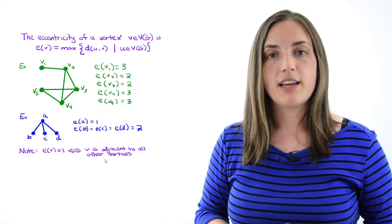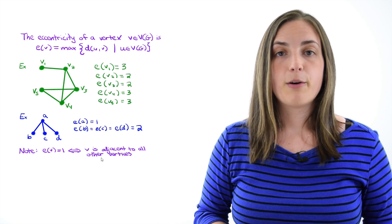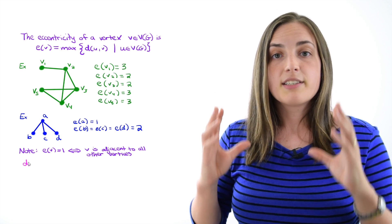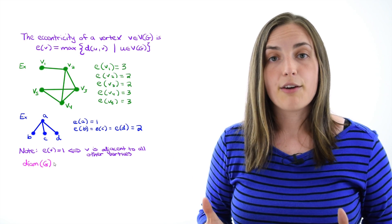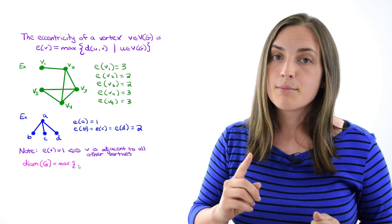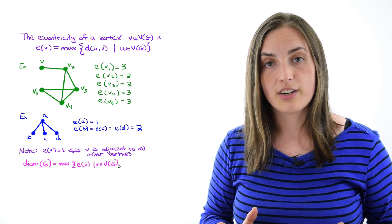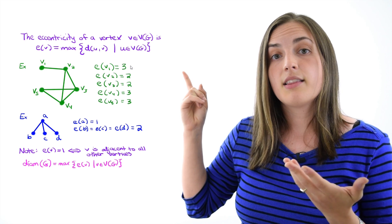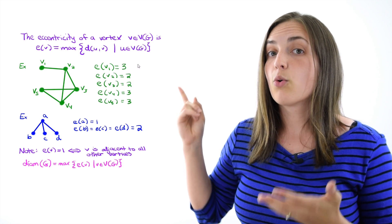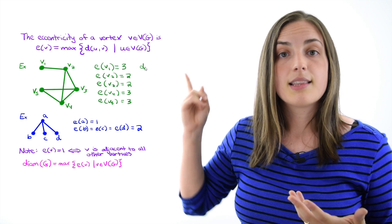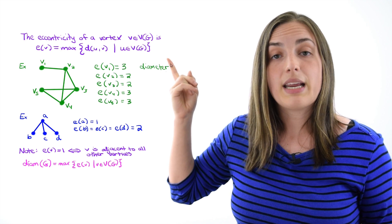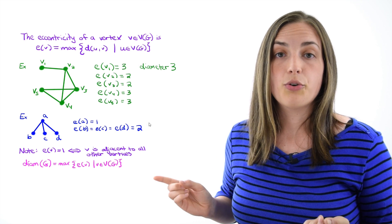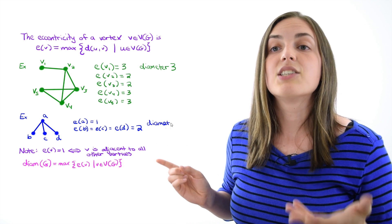Now we're ready to talk about the ideas of radius and diameter. The diameter is defined for the whole graph, and it equals the maximum over all of the eccentricities. Looking at our first example, the eccentricities were either three or two, which means the diameter there is three. Our second example had eccentricities one or two, which means the diameter there is two.